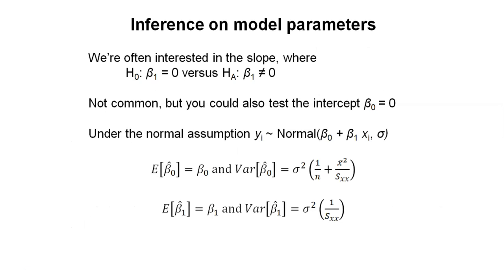We can also make inference on the model parameters. Going back to we might be interested in testing the slope and whether it's 0 or whether it's not 0. We could run a hypothesis test on that. It's not very common, but you could also run a hypothesis test on the intercept beta 0.